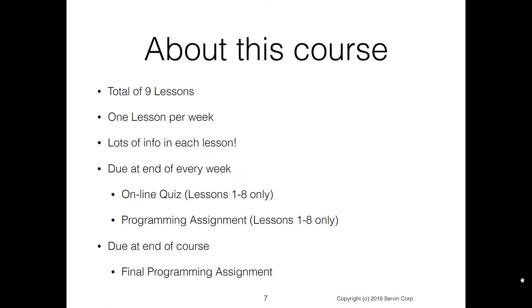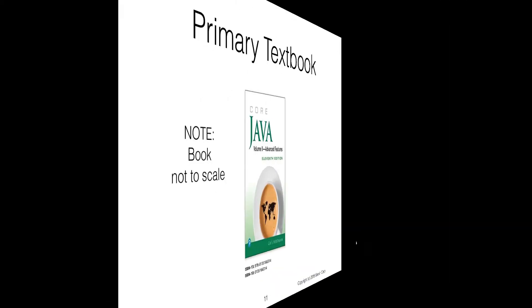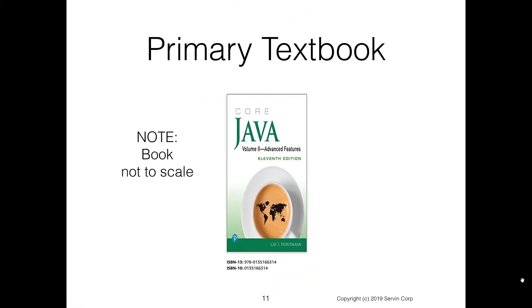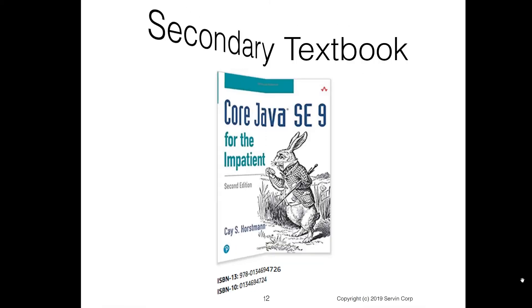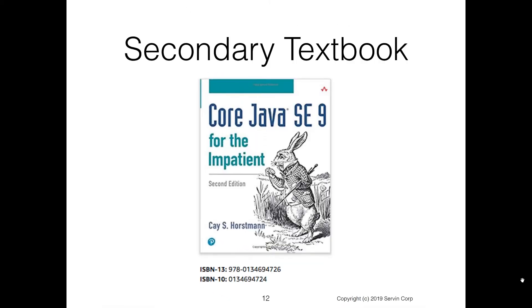About this course: there'll be a total of nine lessons, one lesson per week, and there's lots of info in each lesson. We use two textbooks in this course. The primary textbook is Core Java Volume 2, Advanced Features. The secondary textbook is Core Java SE 9 for the Impatient.